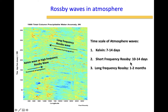Short frequency Rossby waves have an eastward propagation and correspond to the jet stream, because jet streams operate on shorter time scales than the long frequency Rossby waves seen in equatorial regions. You have to decouple these two types of Rossby waves. Long frequency Rossby waves move east to west, while short frequency Rossby waves move west to east.